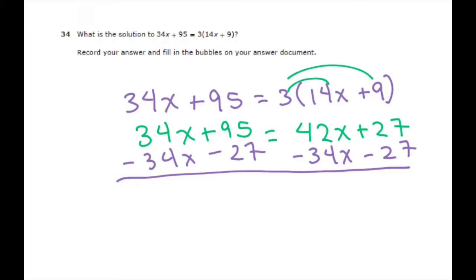So when you do that, you're going to get the 34x's cancel here. 95 minus 27 equals 68.